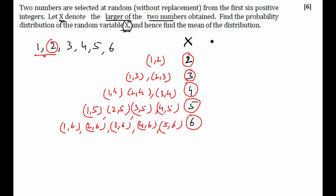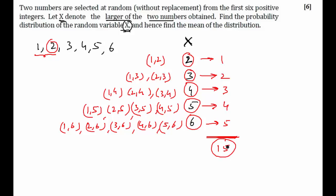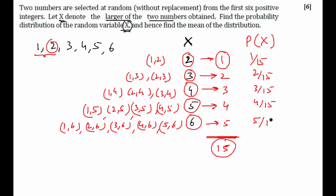The number of favorable outcomes: for X=2 it is 1, for X=3 it is 2, for X=4 it is 3, for X=5 it is 4, and for X=6 it is 5. The total number of outcomes, after adding, is 15. So the probabilities are: P(X=2)=1/15, P(X=3)=2/15, P(X=4)=3/15, P(X=5)=4/15, and P(X=6)=5/15. This data written in this format becomes our probability distribution.